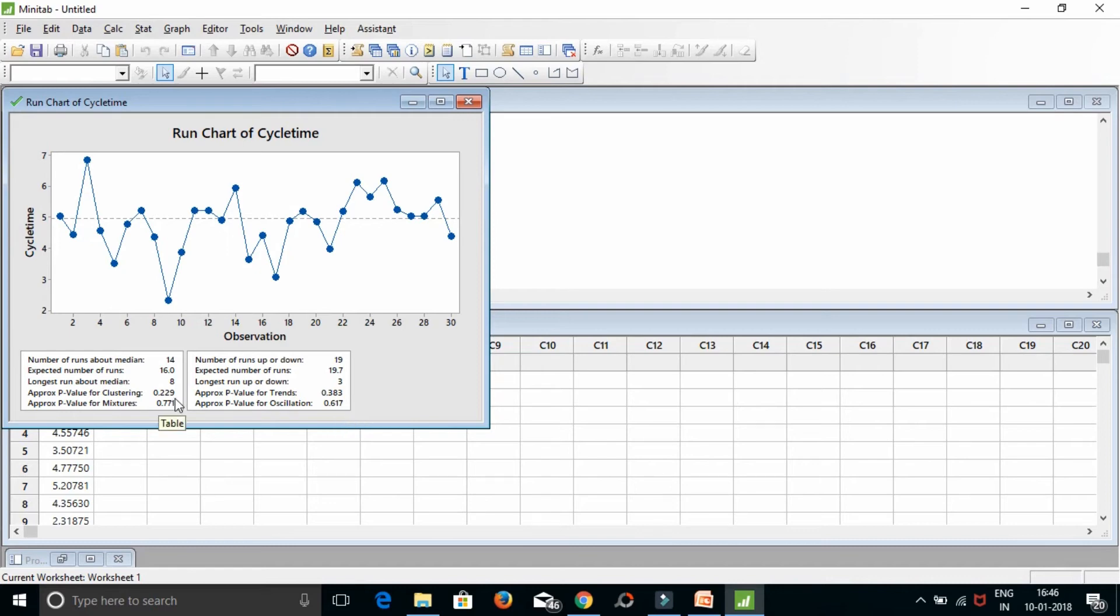There is one more point which I want to tell you. The sum of these two would be 1 and sum of these two would be 1. What does that mean is you can only have clusters problem or mixtures problem, or you can have trends problems or oscillations problem in your data set.